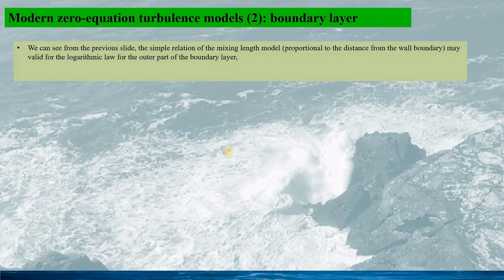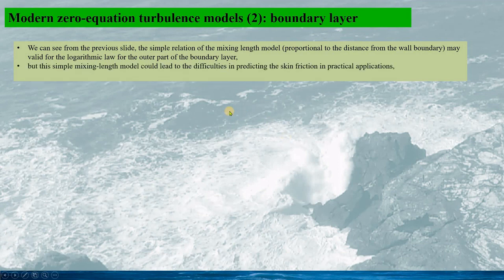So we can see from the previous slide, the simple relation of the mixing-length model that is proportional to the distance from the wall boundaries might be valid for the logarithmic law only for the outer part of the boundary layer. And it is found that this simple mixing-length model could lead to difficulties in predicting the skin friction in practical applications. Therefore the modified mixing-length models have been proposed.